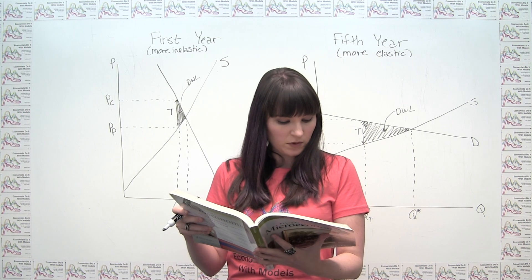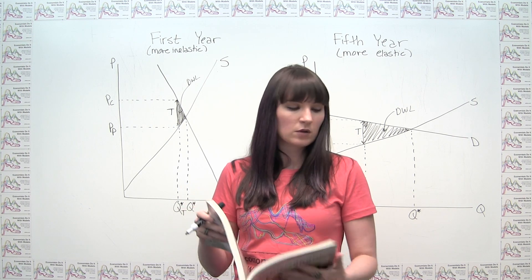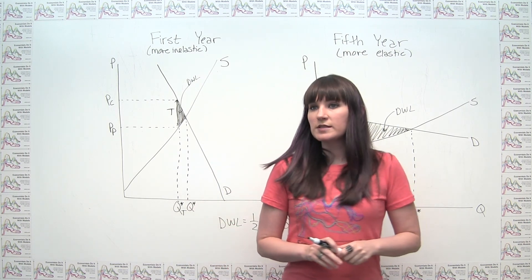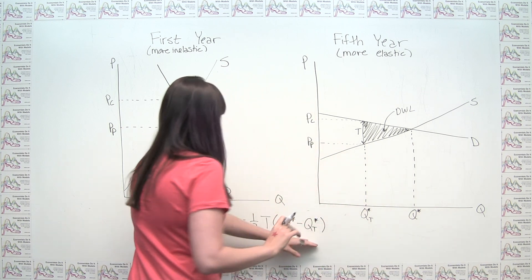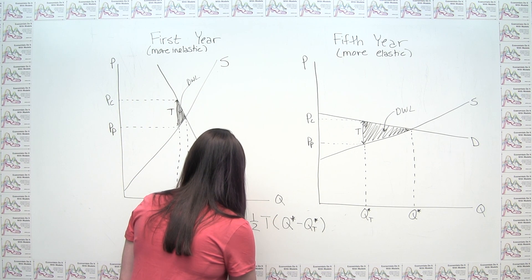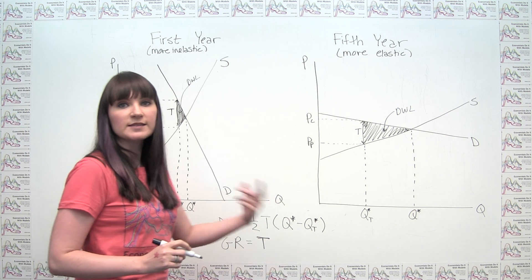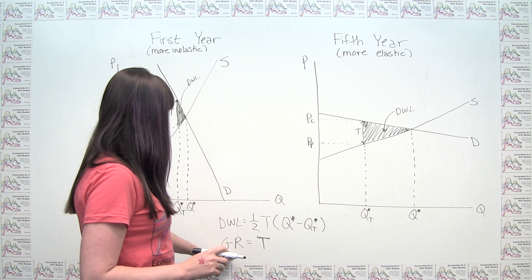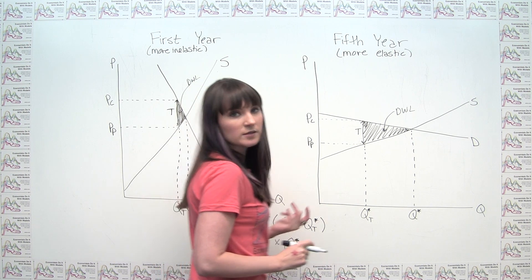Part B of the question asks: would the revenue collected from this tax likely be greater in the first year after it is imposed or in the fifth year? We can use the same diagrams and reasoning. Government revenue from a tax equals the tax per unit times every unit that's still bought and sold once the tax is in place: government revenue = t × Q* sub T, because that's the quantity still transacted after the tax.